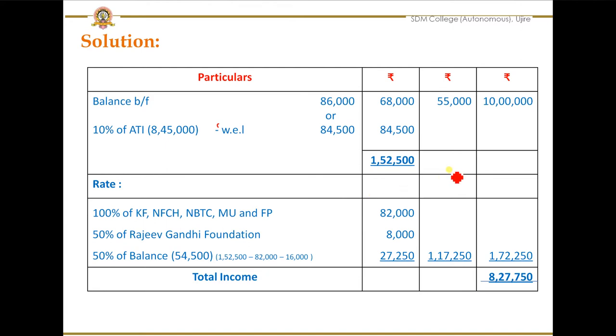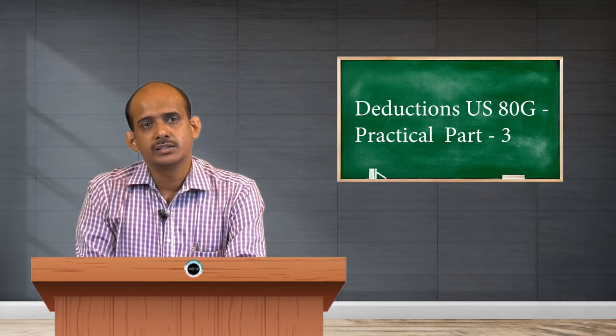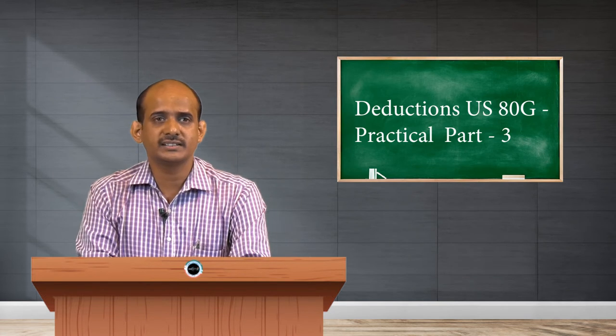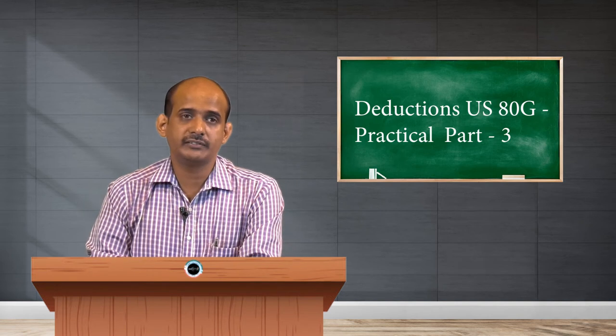We already have 68,000 from the without-limit donations category and 84,500 from the with-limit category. Put together, we get the qualifying amount as 1,52,500. This is the total qualifying amount eligible under section 80G, but that does not mean the entire 1,52,500 can be deducted straight away. For that we have to take up the next step, that is the application of rates.